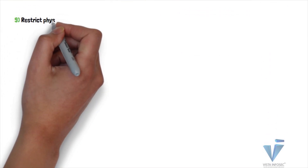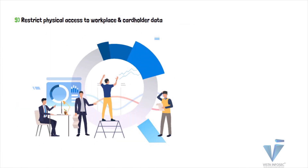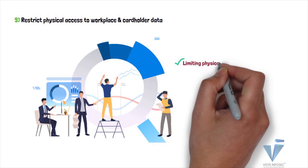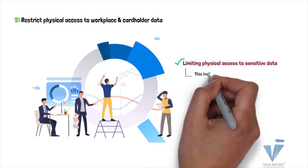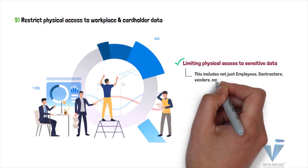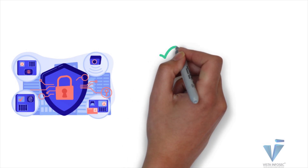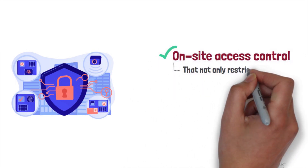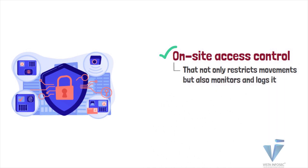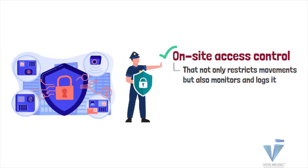PCI DSS Requirement 9, which is to restrict physical access to workplace and cardholder data, involves limiting the physical access to sensitive data. This includes restricting employees, contractors, vendors, consultants, and guests to the card data environment, as well as access via systems, devices, and even hard copies. Such protection requires on-site access control that not only restricts movement within an installation but also monitors and logs it. There must also be a procedure to identify unauthorized individuals on site, with security personnel dedicated to enforcing these rules. All media devices must be physically secured, backups maintained at an off-site location, and the organization must destroy all media when no longer needed.